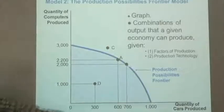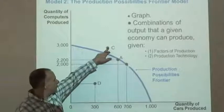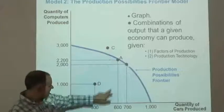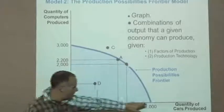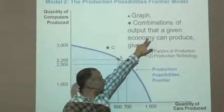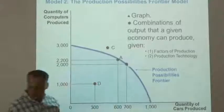The last point that we consider, point C, is not attainable. We can't get here. This is beyond our boundary. This might be something like 450 cars and 2,800 computers. Certainly, we could not do 1,000 and 3,000.